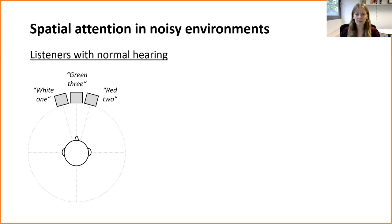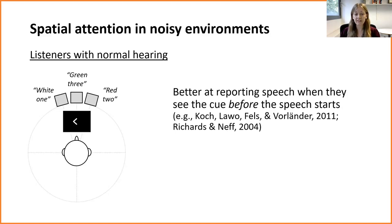In a typical experimental situation, the listener is in the centre of an array of loudspeakers and they hear three different phrases spoken by three different people from different locations in front of them. We can tell them in advance which voice they should listen to by presenting a visual cue on the screen. For example, they might see a leftward pointing arrow which would tell them to listen to the talker on their left. There's lots of evidence to suggest that these instructive visual cues are beneficial — people with normal hearing are better at reporting speech when they receive these cues before the speech starts than when they don't get a cue at all or when that cue occurs after the talkers have started speaking.